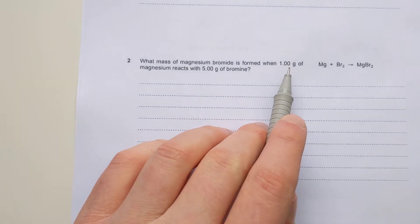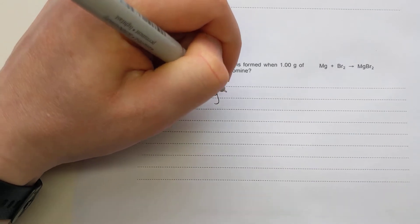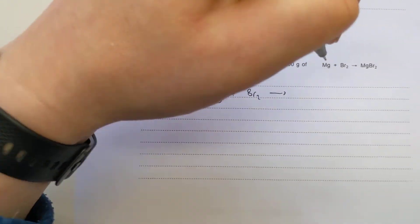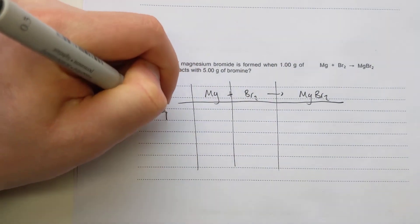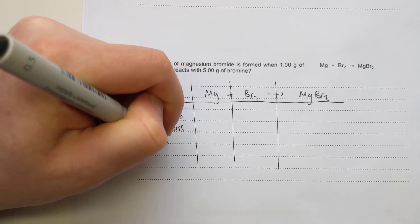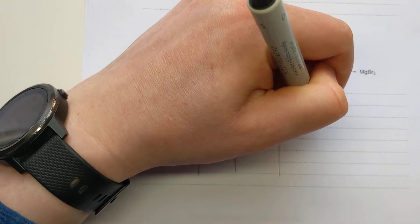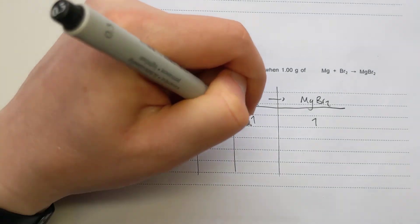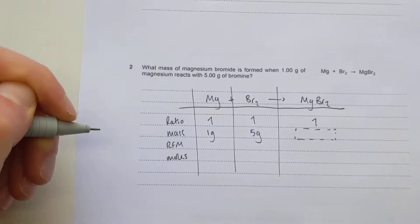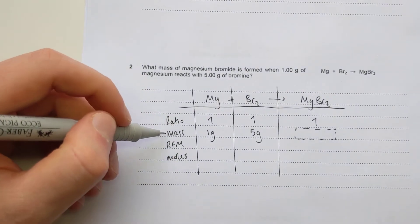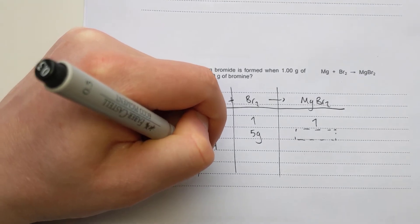Question two is very similar - you've got two masses given: 1 gram of magnesium and 5 grams of bromine, making magnesium bromide. Setting up the table, ratio first - again a nice simple one-to-one-to-one ratio. The masses given are 1 gram of magnesium and 5 grams of bromine, and the mass I'm trying to find is magnesium bromide. Starting point: work out moles of both. Moles equals mass divided by RFM. RFM of magnesium from the periodic table is 24, giving moles of 0.0417.